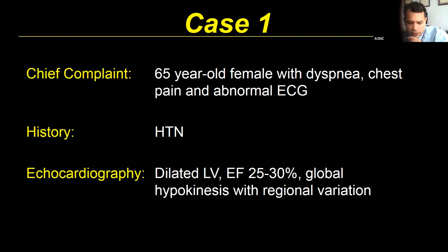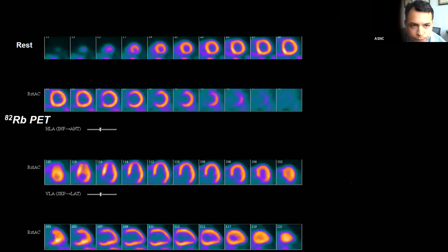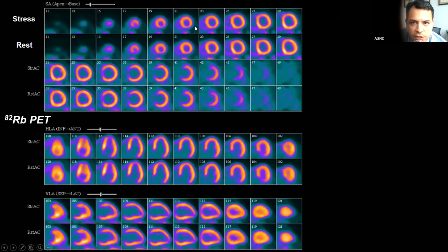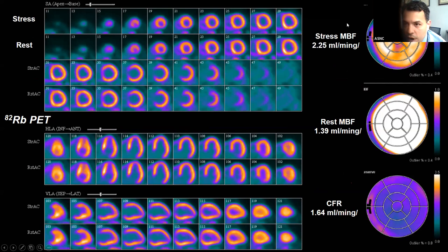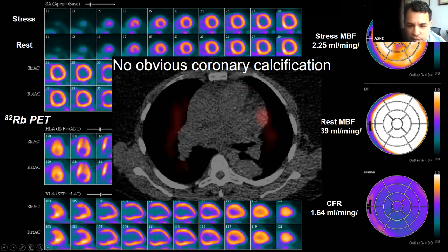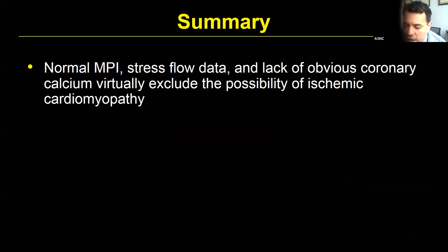Case 1: A 65-year-old female with dyspnea, chest pain, dilated heart with EF of 25-30%, global hypokinesis with some regional variation referred for stress testing. Resting perfusion shows no abnormalities. Stress perfusion is completely normal with normal coronary flow and mildly reduced flow reserve — likely because resting myocardial blood flow is somewhat elevated. CT attenuation correction showed no calcium. This is likely a non-ischemic dilated cardiomyopathy, and stress testing alone is sufficient to rule out an ischemic etiology.